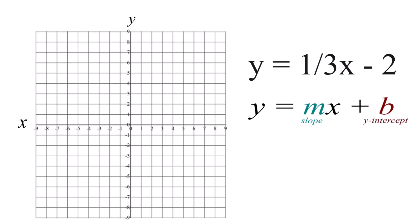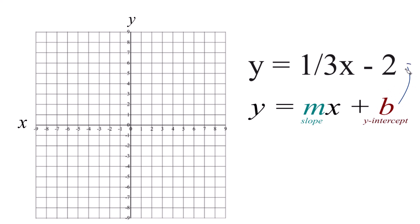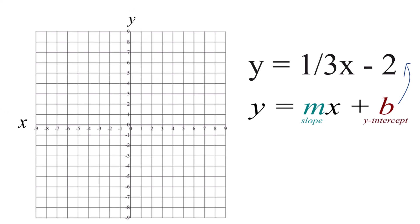So when we're looking at our slope-intercept form, the y-intercept right here, that's negative 2. So that's where we're going to cross the y-axis. So we grab a point here, and at negative 2, we put our first point.